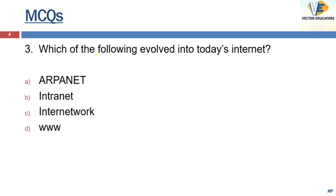Next question: which of the following evolved into today's internet? The answer is ARPANET — it stands for Advanced Research Projects Agency Network. It was formed by the US Defense Department in the 1960s, and later, with the adoption of the TCP/IP suite, it evolved into the internet in 1983.